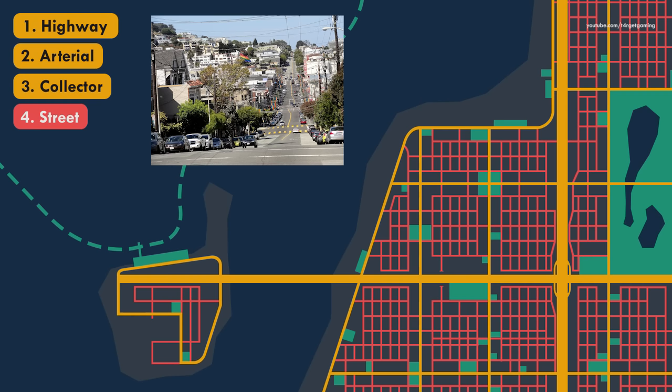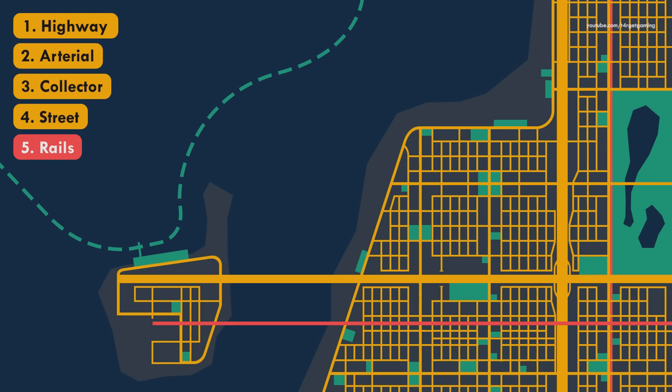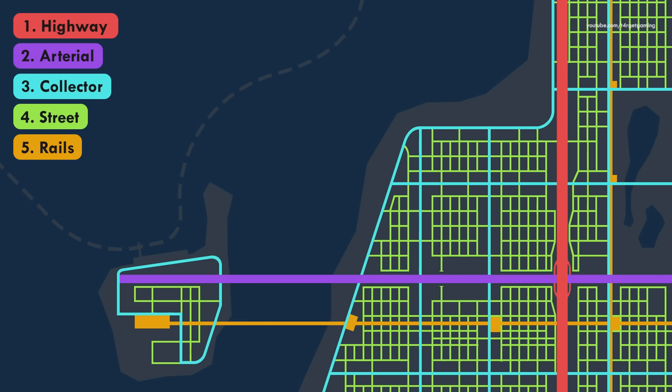In addition to these road types, more complex transport systems that involve their own dedicated infrastructure — like trains, metro, or trams — are also taken into account, with their stations and access points being located in areas of high traffic and activity, such as arterials or collectors.